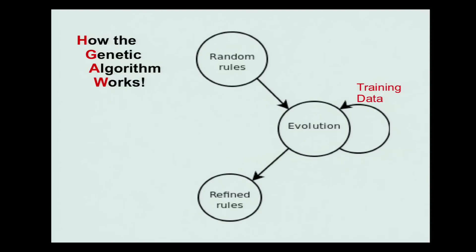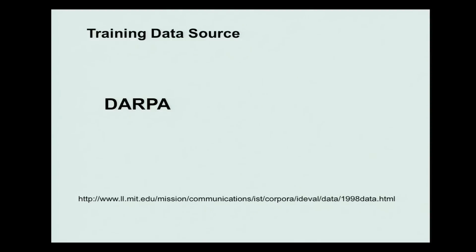I'm going to take you through the process of generating these rules. First, you have to have audit data — some sort of system to generate it. This shows the systems here. It's like the canary in the coal mine: you're recording the attributes of when the canary falls over, and that's when you know an attack has occurred.